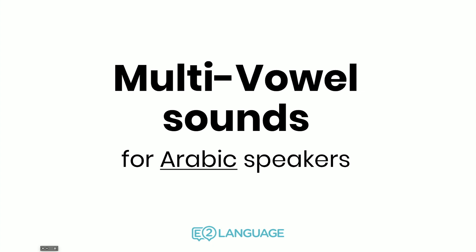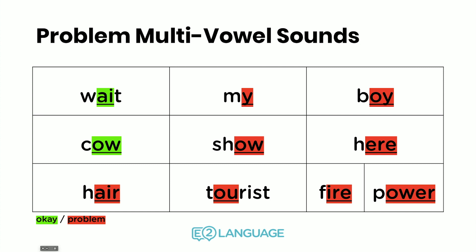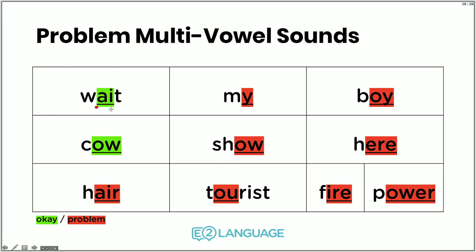Let's look at multi-vowel sounds — more than one vowel together. These are called diphthongs in linguistics. In English there are ten of them. You have no problems with 'wait' — the 'ay' sound — and 'ow' as in 'cow', since these exist in Arabic. But you have lots of problems with: 'I' as in 'my', 'oi' as in 'boy', 'o' as in 'show', 'ear' as in 'here', 'air' as in 'hair', 'ur' as in 'tourist', 'ire' as in 'fire', and 'our' as in 'power'.